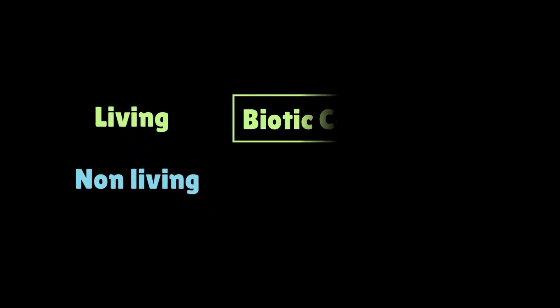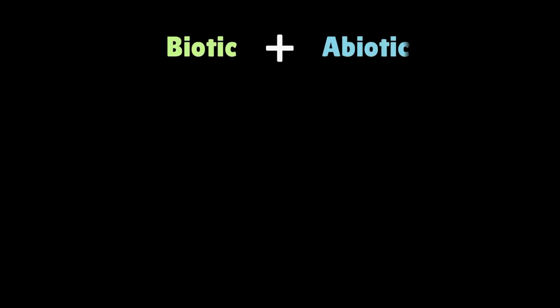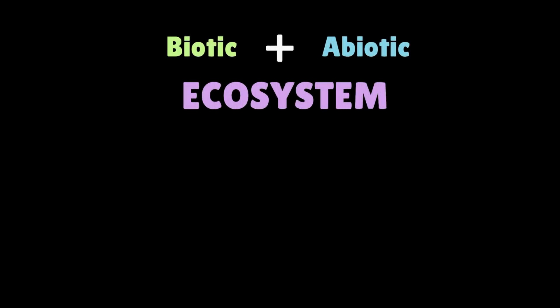By the way, the living organisms in the environment are called the biotic components, and the non-living ones are called the abiotic components. When biotic and abiotic components interact in a place, we call it an ecosystem.